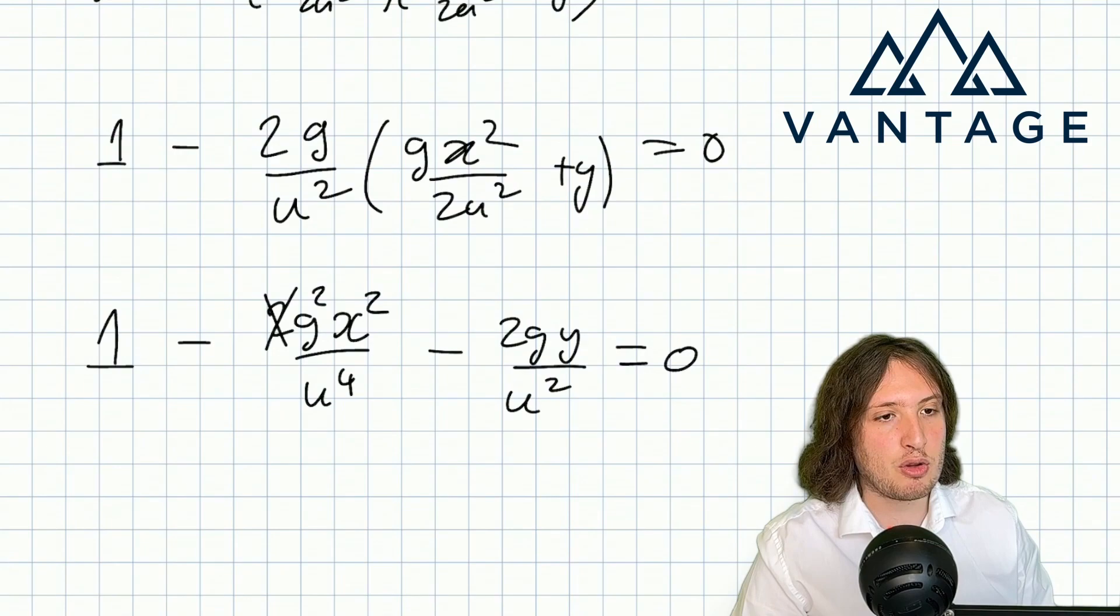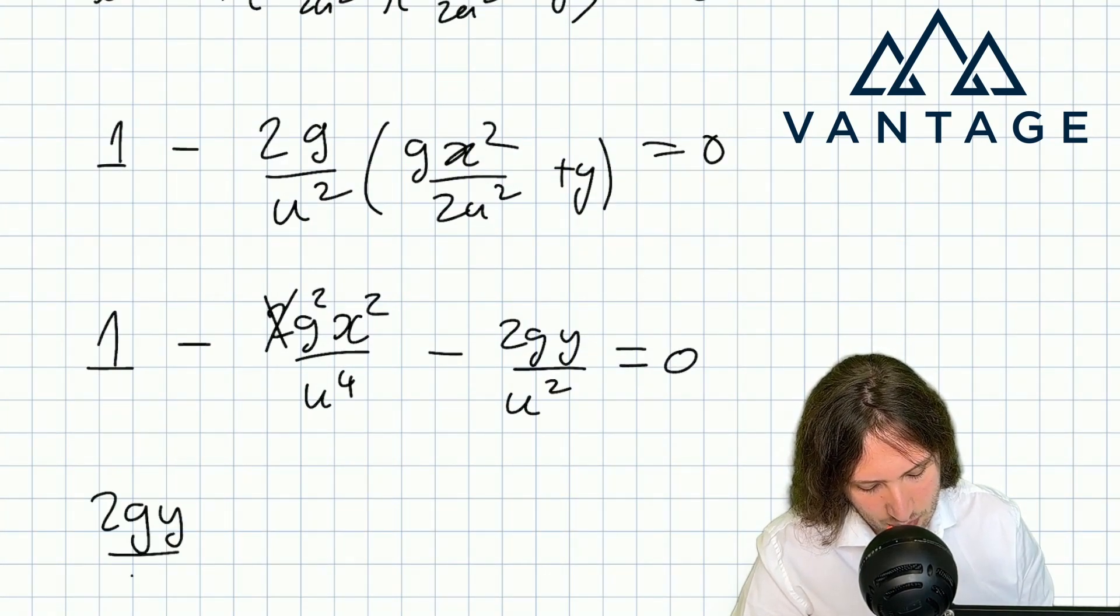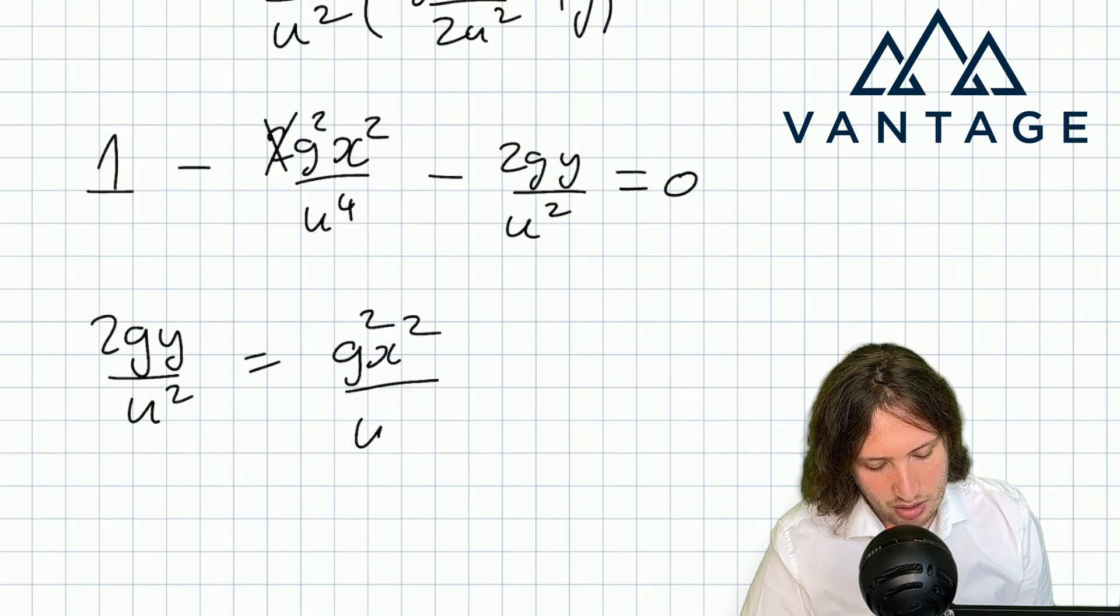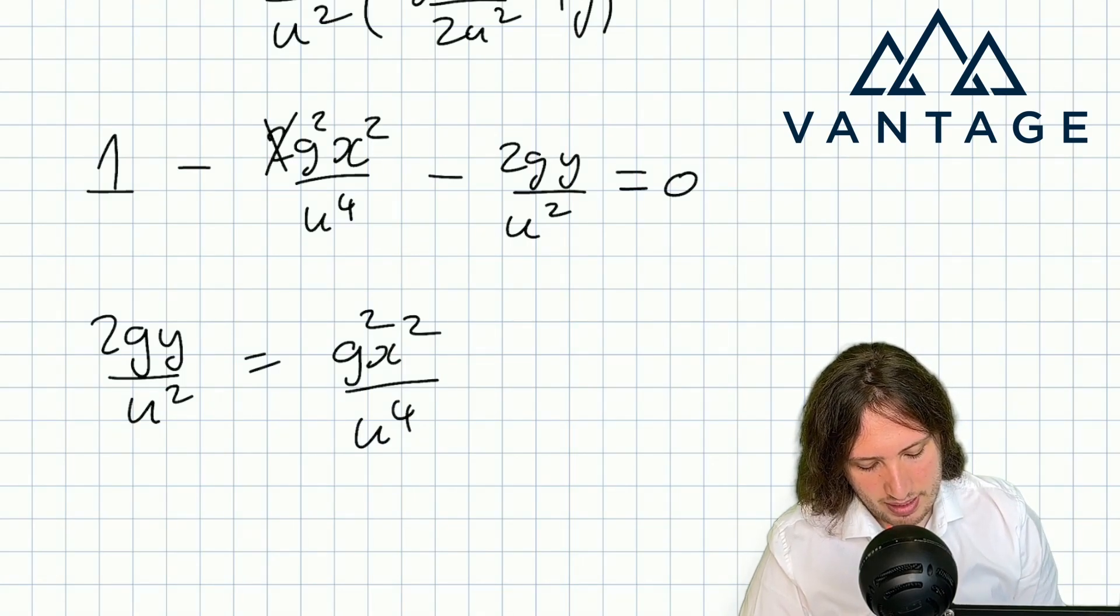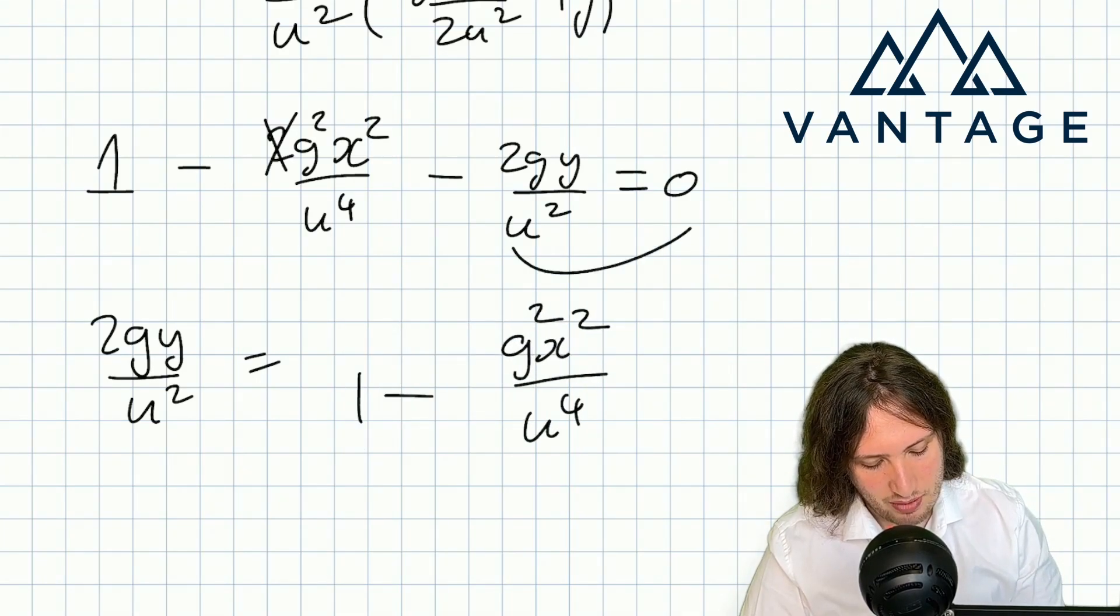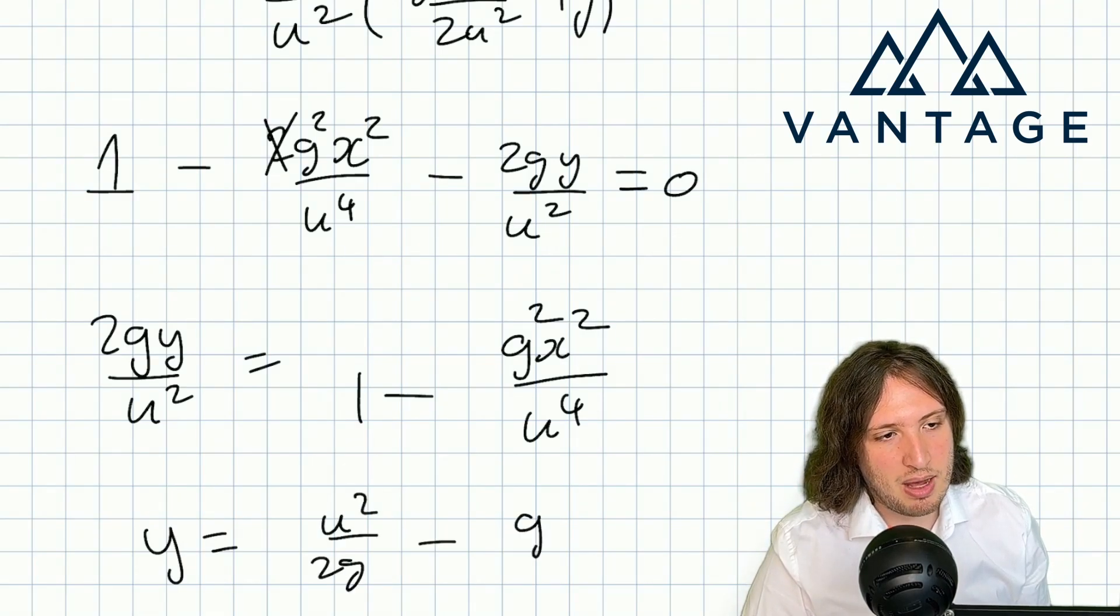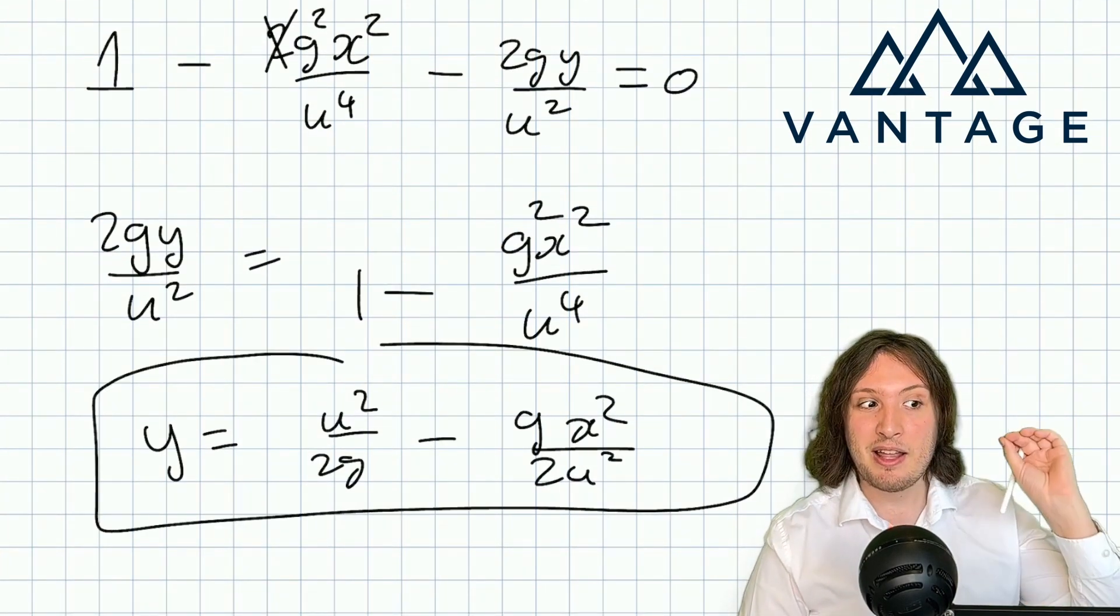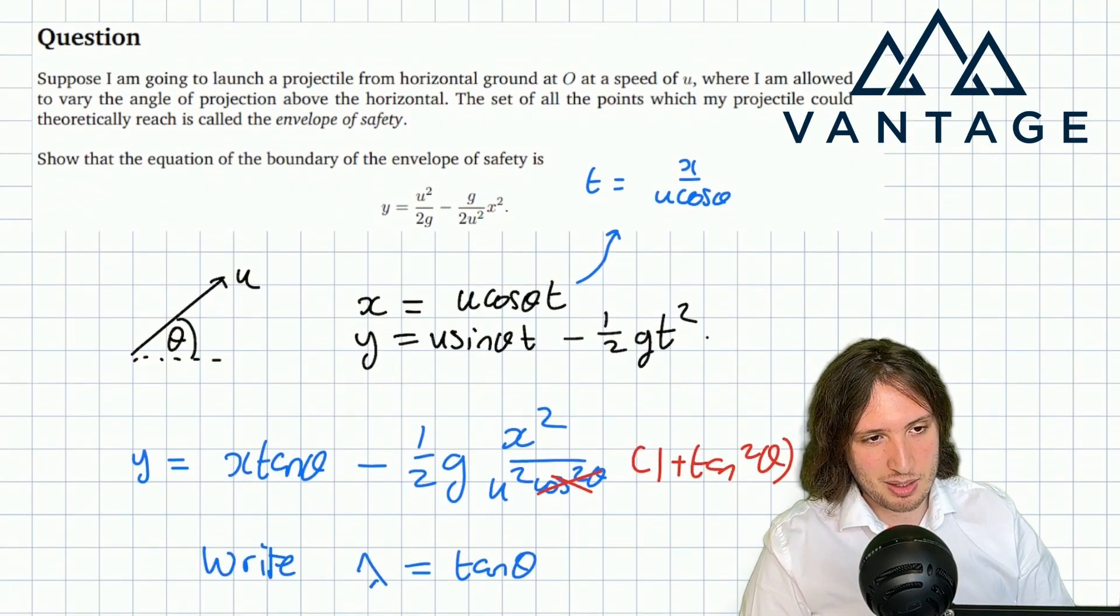Let's expand the brackets. I get 1 minus—the 2 cancels—minus gx² over u⁴ minus 2gy over u² equals zero. Let's make 2gy the subject: 2gy over u² equals 1 minus gx² over u⁴. That means y equals u² over 2g minus gx² over 2u². That is precisely the envelope of safety, the equation we were asked to find.